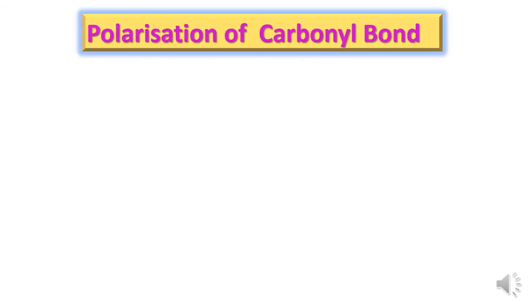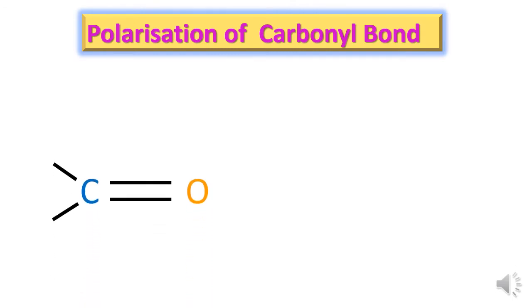First, let's see what is the polarization of carbonyl bond. In a carbonyl bond, there is a presence of carbon and oxygen with a double bond between them. Oxygen is more electronegative than carbon, so one of the electron pairs present between carbon and oxygen gets attracted towards the oxygen atom. Therefore, oxygen gets a negative charge whereas carbon gets a positive charge.